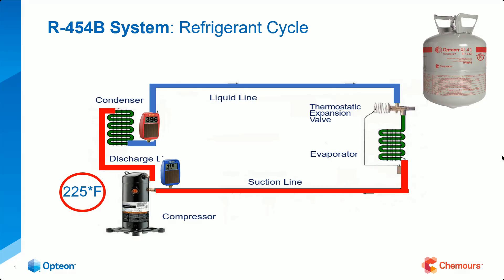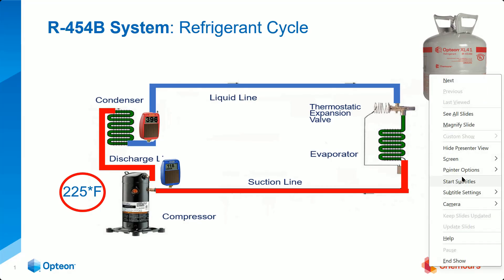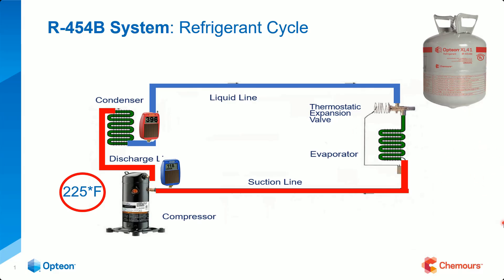We've got four basic components in a DX system. It doesn't matter how large the system is or how small — it could be in the dashboard of your car or the most complex system you can think of. Those four components are: our metering device, an evaporator coil, a compressor, and a condenser.